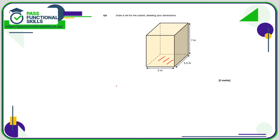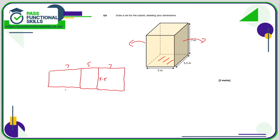Question number five: we want a net of this cuboid. I'll start with the base, which is five by five-point-five. Then I'll fold two faces outward — those are five-point-five by seven, so here's my five-point-five and here's the seven on each side. Obviously on squared paper with a ruler this is much easier — I'm just freestyling with a graphics tablet. I've now dealt with the base and both of those side faces, so I'll fold the front face this way and the opposite face in the other direction — those are also five by seven, so there's my five and there's my seven.